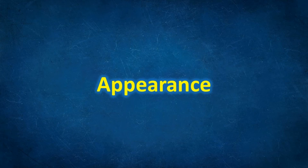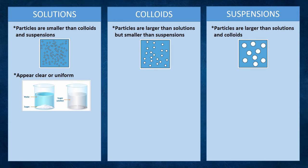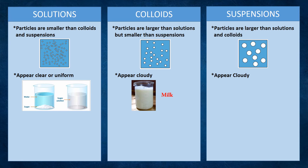Solutions appear clear or uniform — we cannot identify the components that were mixed. For example, water with sugar. Colloids appear cloudy, and we also cannot identify what was mixed; for example, water and milk. Suspensions also appear cloudy, but their components are recognizable. For example, water with oil.